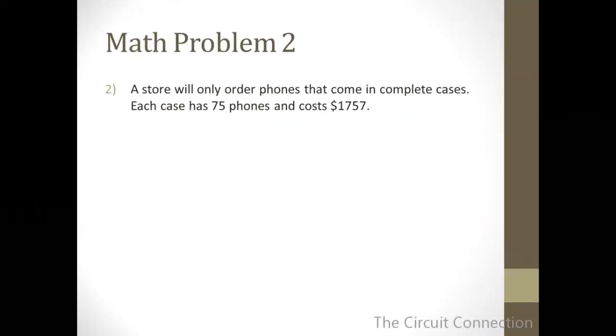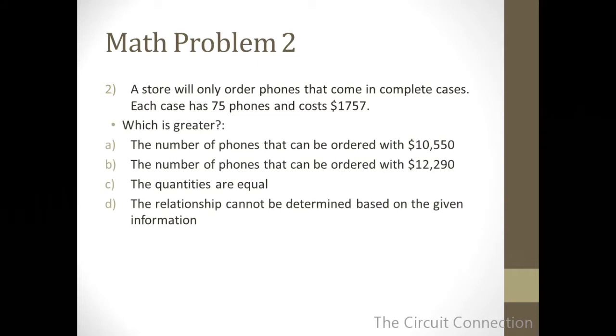So next, problem number 2. A store will only order phones that come in complete cases. Each case has 75 phones and costs $1,757. The question is, which is greater? The number of phones that can be ordered with $10,550 or B, the number of phones that can be ordered with $12,290, or C, the quantities are equal, or D, the relationship cannot be determined based on the given information.